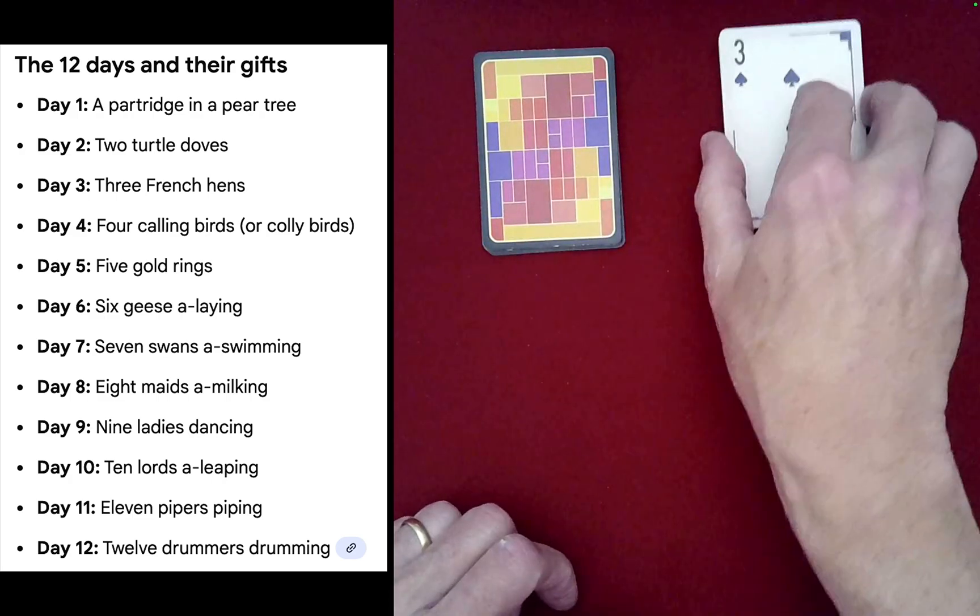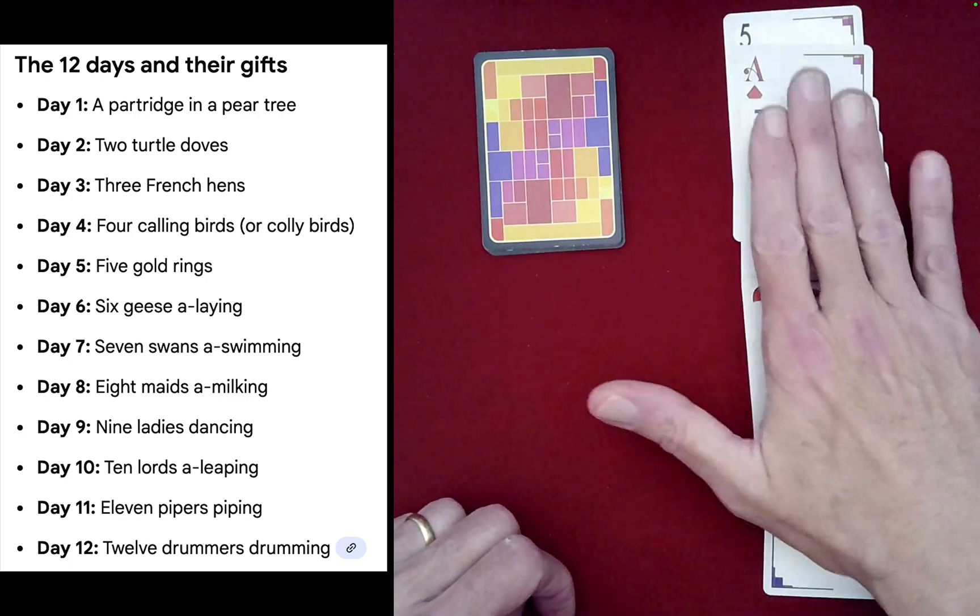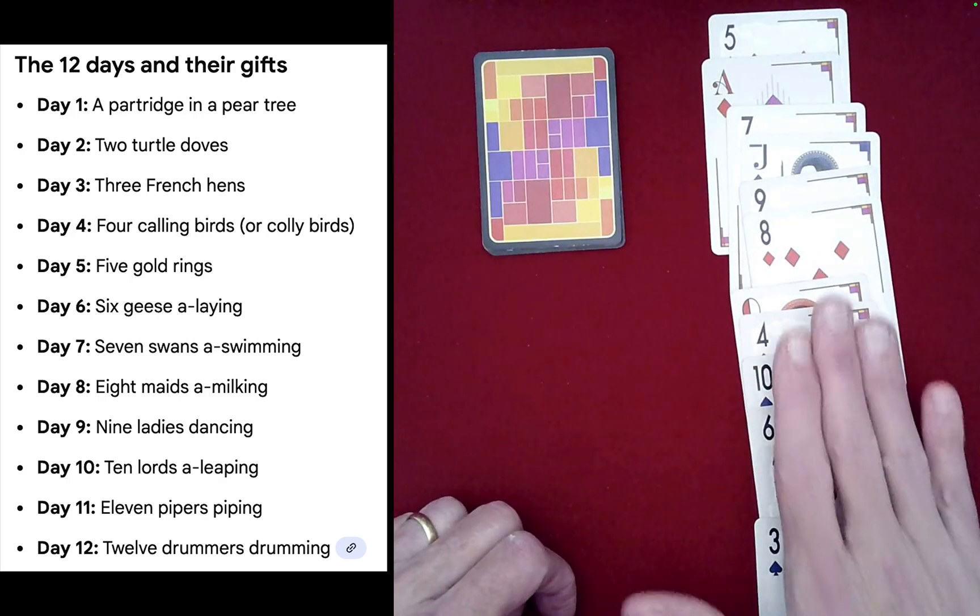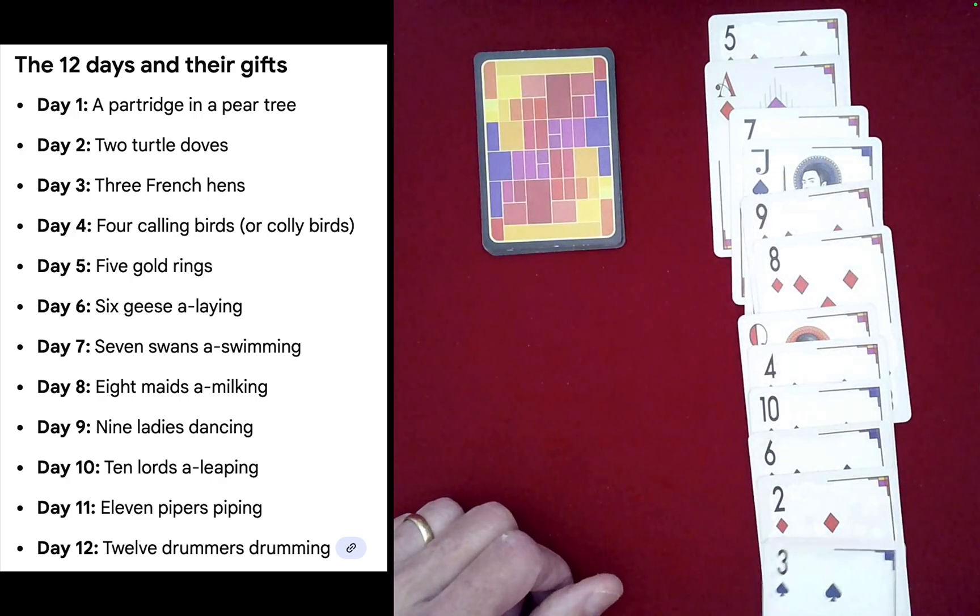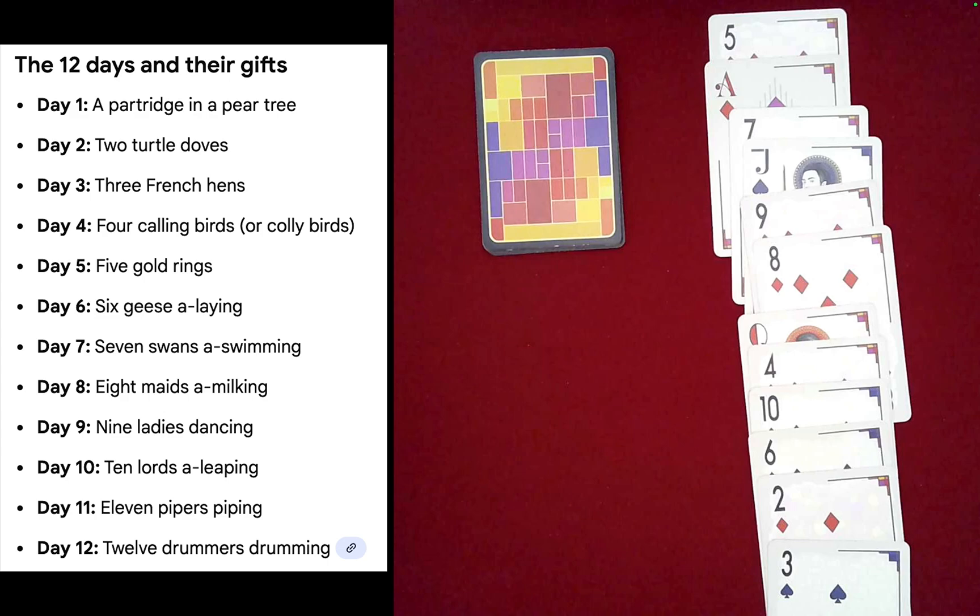Check that out! Spectator A is feeling pretty good, and I would imagine that would mean that spectator B also walked away with a complete set of all 12 gifts for the 12 Days of Christmas. That is absolutely a Christmas miracle.